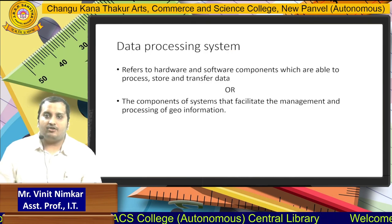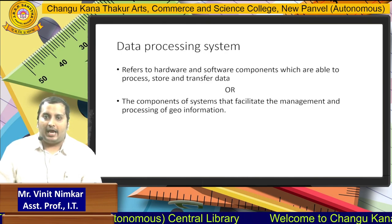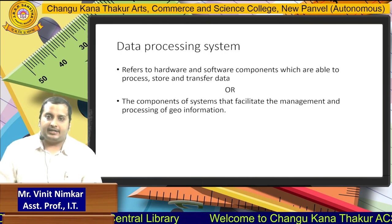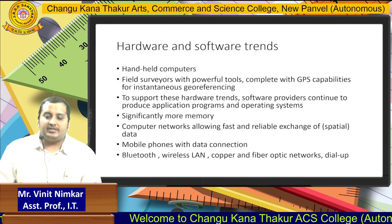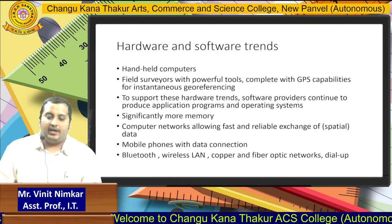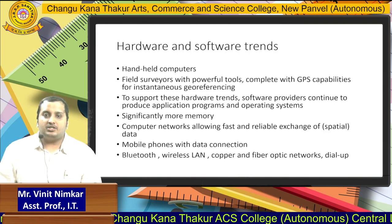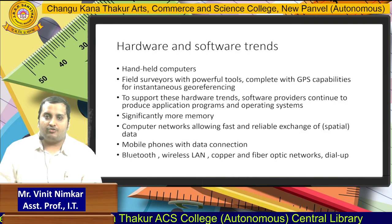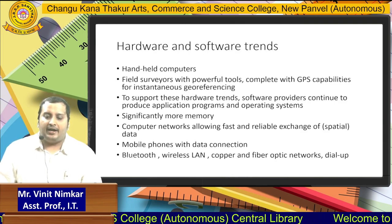Data processing systems refers to hardware and software components which are able to process, store and transfer data. In that there are two main topics: hardware and software trends. In GIS, it is a combination of both hardware and software.